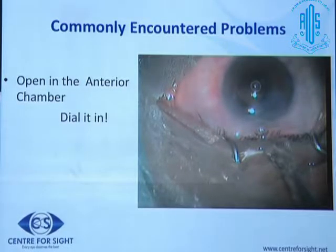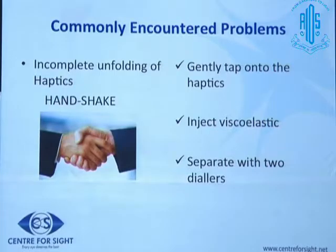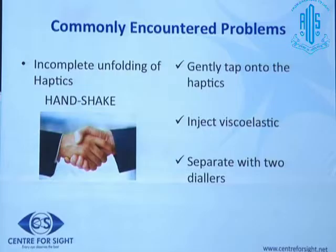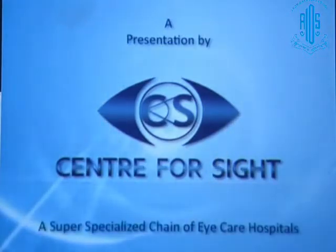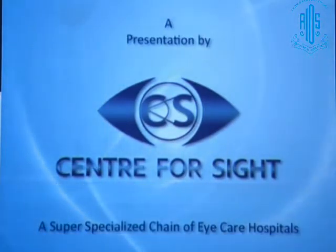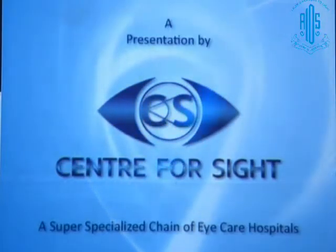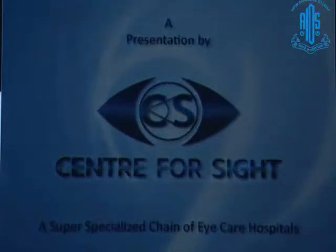At times lenses do not open, or the haptic-optic junction can get stuck — this was more common with earlier investor-style lenses. To address this, you can gently tap on the haptics using irrigation-aspiration, inject viscoelastic, or use two dialers to separate them. These are some tricks to efficiently complete intraocular lens implantation.